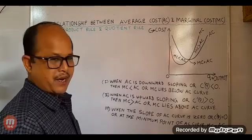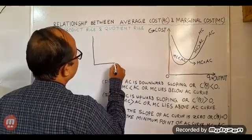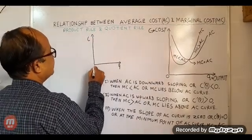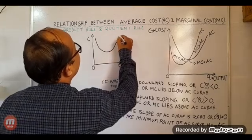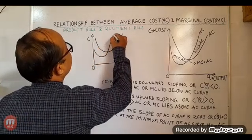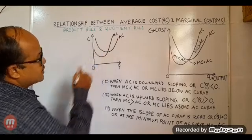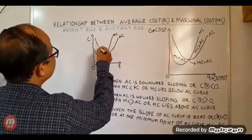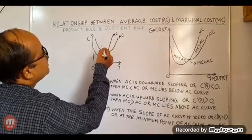Here we take the use of the average cost curve. This is the output on the x-axis and this is the cost on the y-axis, with the origin point. The average cost curve, AC, is U-shaped, and the marginal cost curve, MC, is also U-shaped. When the average cost curve is downward sloping, up to the minimum point, the marginal cost curve lies below the average cost curve.